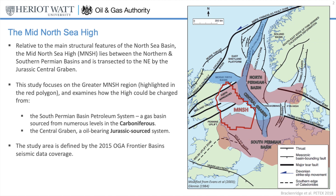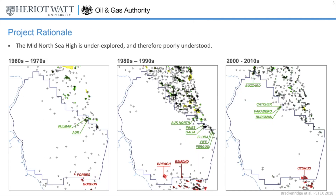So we know that this region is influenced by three distinct petroleum systems. Why did the Oil and Gas Authority decide to fund a study on the region? These maps show the exploration activity over time from the 1960s on the left to the present day on the right. They show that despite early interest in the region with a number of wells being drilled, companies soon turned their attention to the more prolific central graben and southern North Sea gas basin, despite a number of significant discoveries around the margins of the study area over recent years.